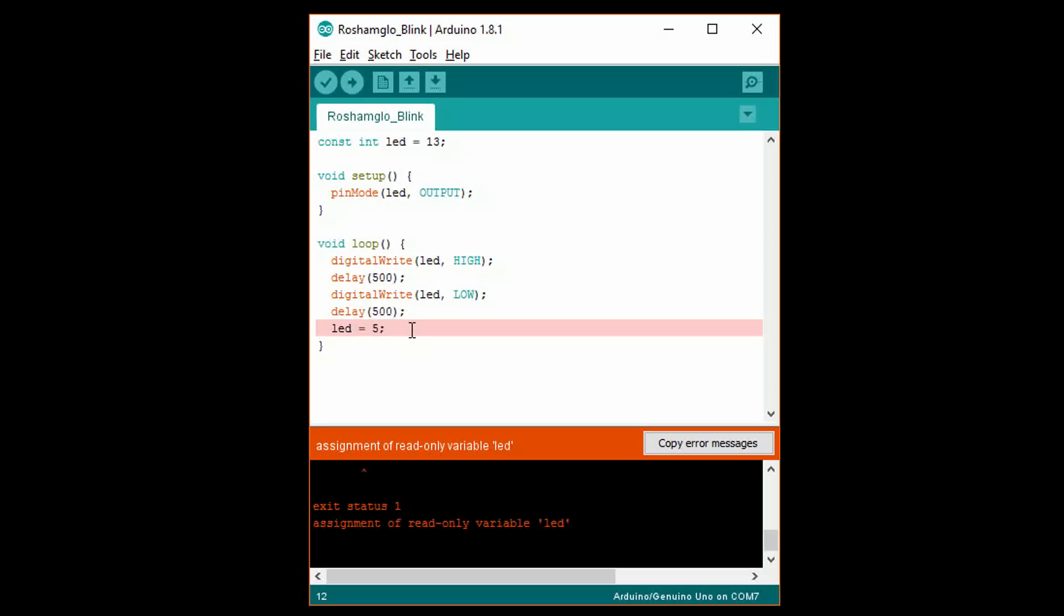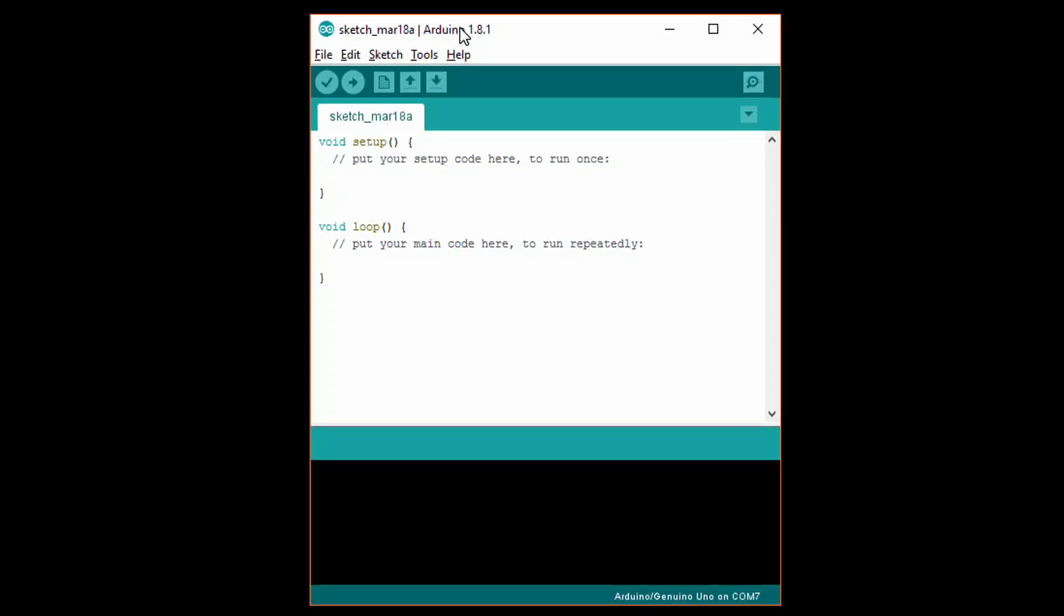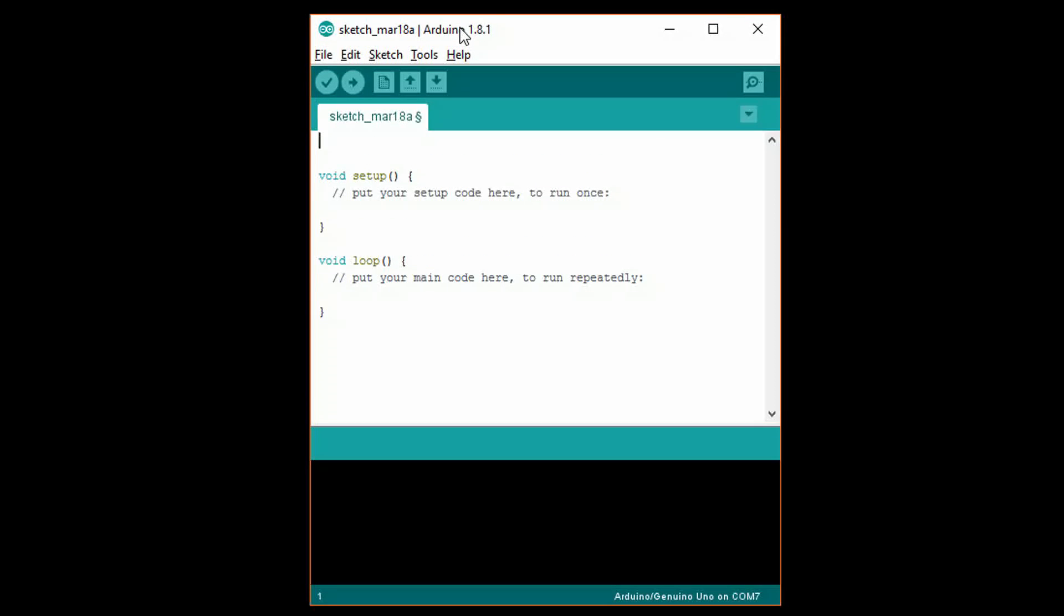Let's also see how to print variables to the console. This is extremely handy when it comes to debugging your program. Start a new Arduino sketch, and at the top, write char A equals, single quotation, capital S, single quotation, semicolon, followed by int B equals 76, semicolon.